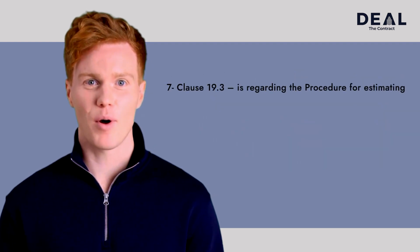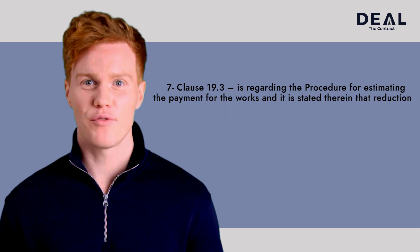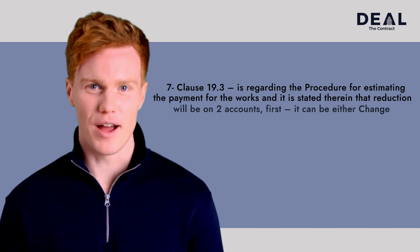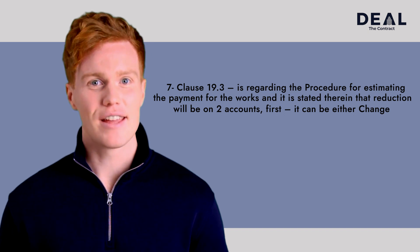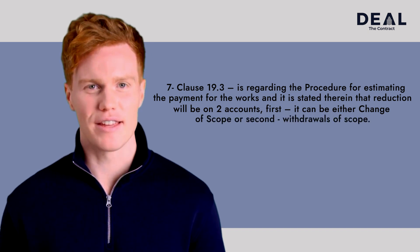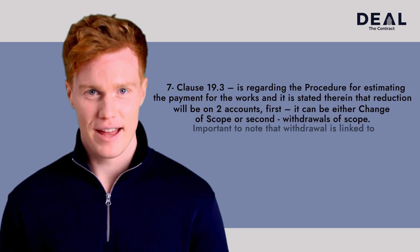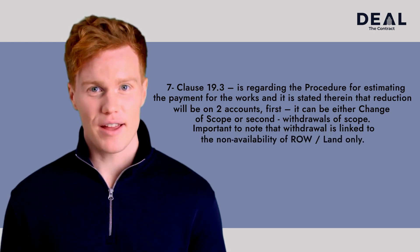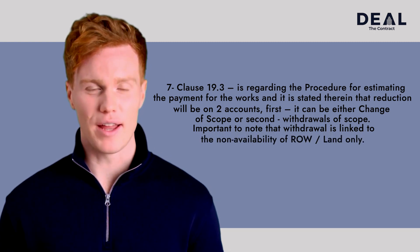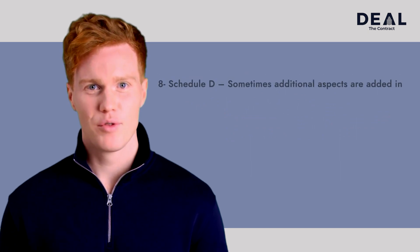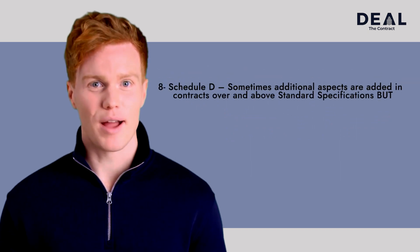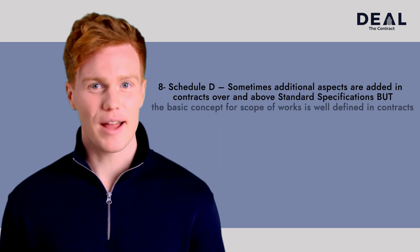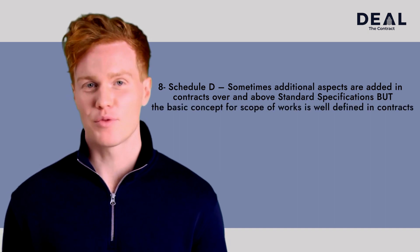Seventh, Clause 19.3 is regarding the procedure for estimating payment for the works. It is stated therein that reduction will be on two accounts: first, either a change of scope, or second, a withdrawal of scope. Important to note that withdrawal is linked to the non-availability of ROW or land only. Schedule D sometimes has additional aspects added over and above standard specifications.